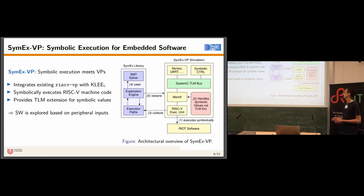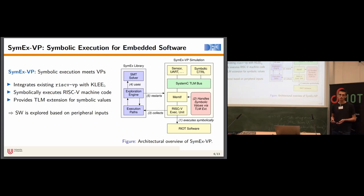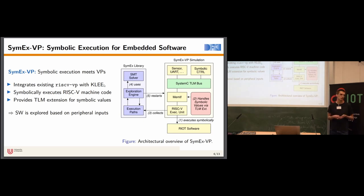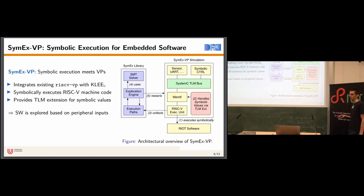If the software exercises a register in the UART — for example, reading the UART data register — we can modify our SystemC model of the UART to return symbolic values to the software. These symbolic values are transported over the TLM bus and memory interface to the executed software. The software is then explored based on these test inputs returned by our UART model. Essentially, SymEx-VP explores embedded software based on peripheral inputs.